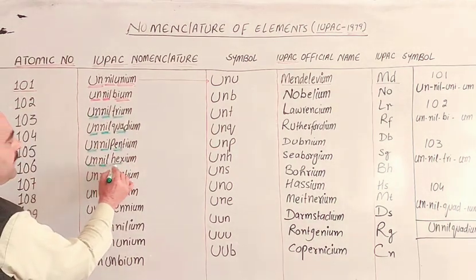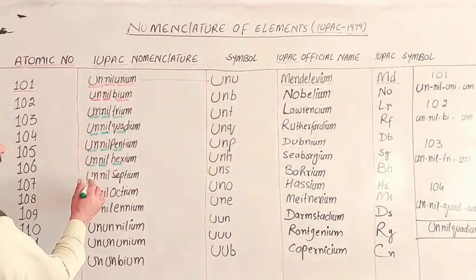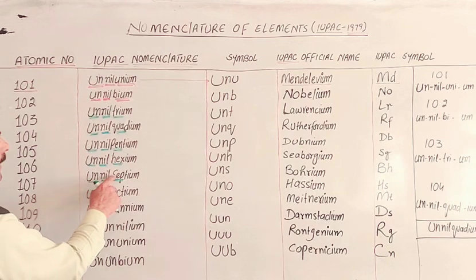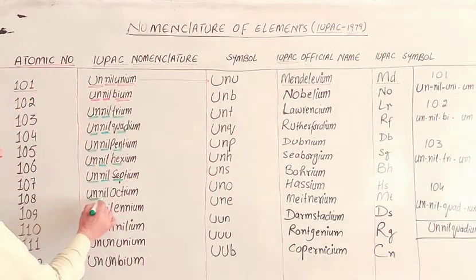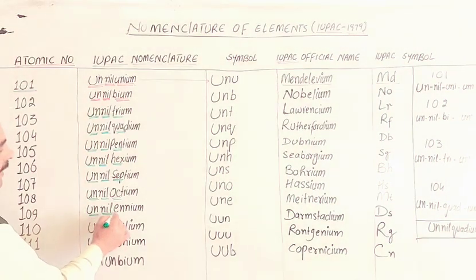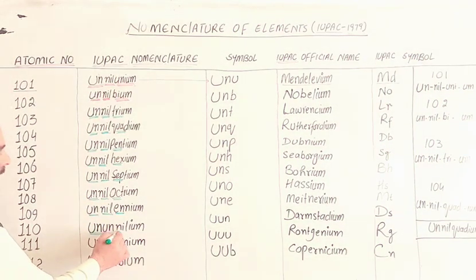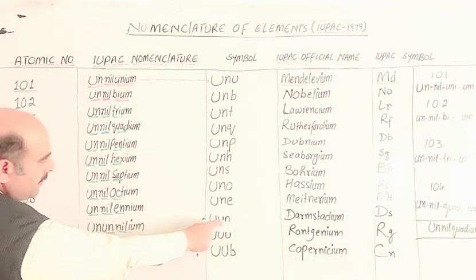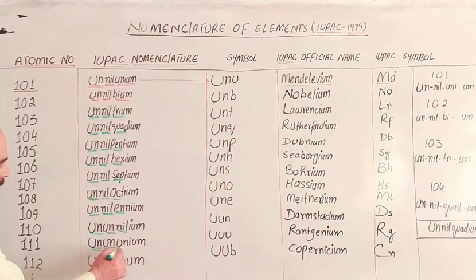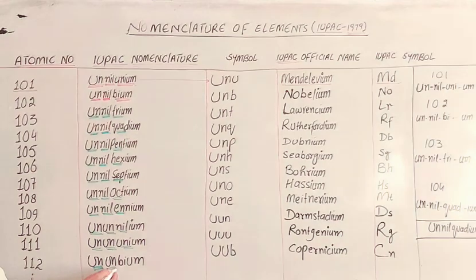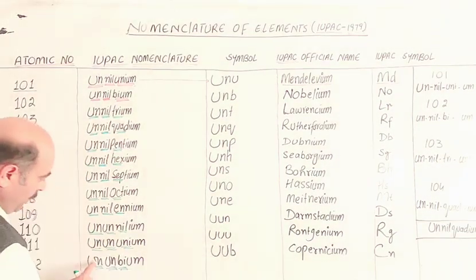The systematic IUPAC names follow this pattern: Unpentium (Unp), Unhexium (Unh), Unseptium (Uns), Unoctium (Uno), Unennium (Une), Ununennium, Ununbium (Uub). These are the systematic placeholder names for the transactinide elements.